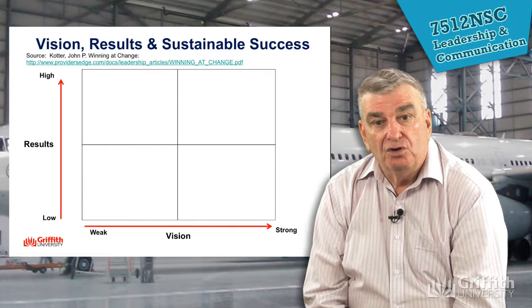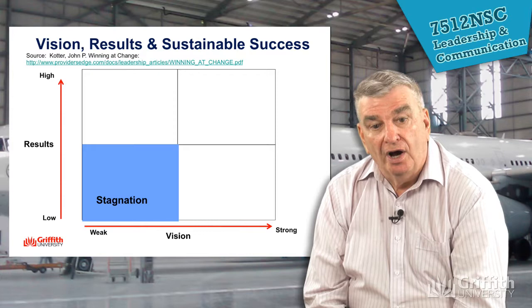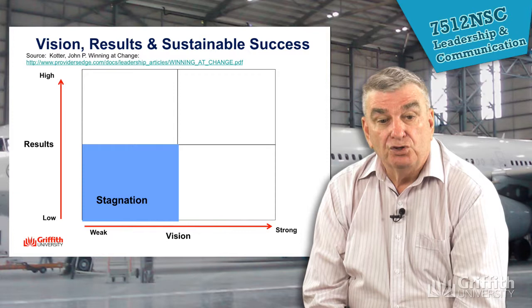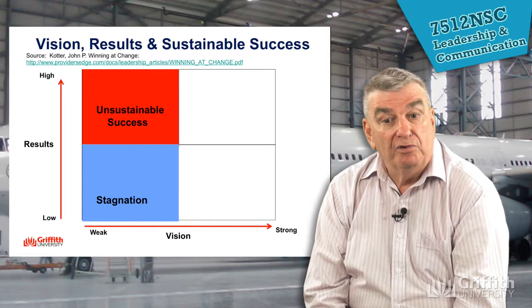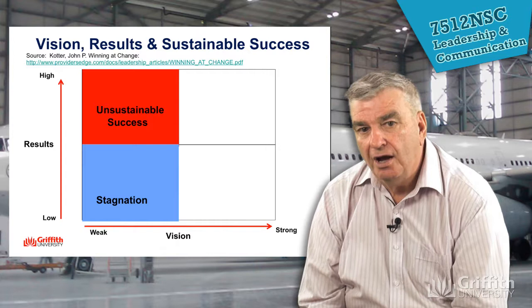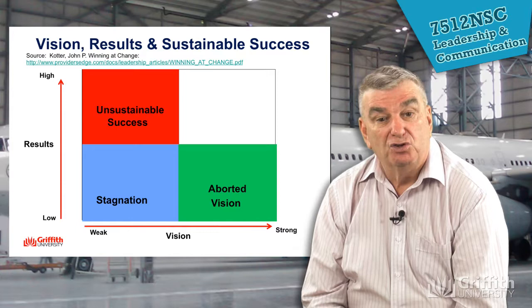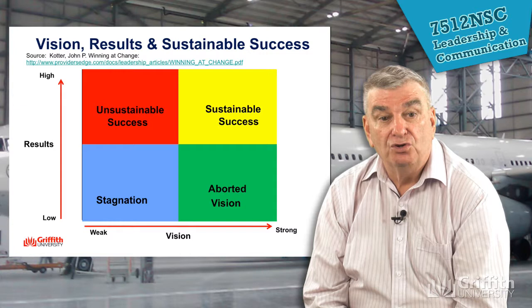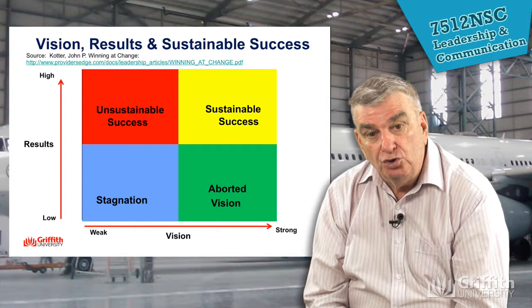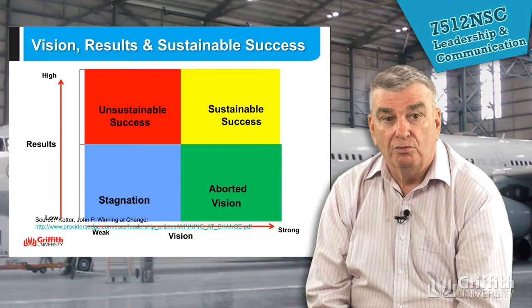We can look at visions in a way where we assess whether they are weak or strong and whether results are low or strong. A weak vision and poor results means stagnation — the company's not going anywhere. A weak vision and good results gives unsustainable success — we don't know how we achieved it and it probably won't last. A strong vision but low results means we're going to have to change. But where we have a strong vision and great results, we've got sustainable success.